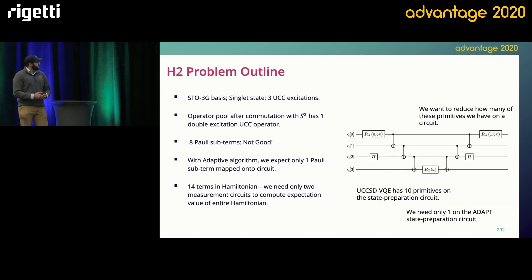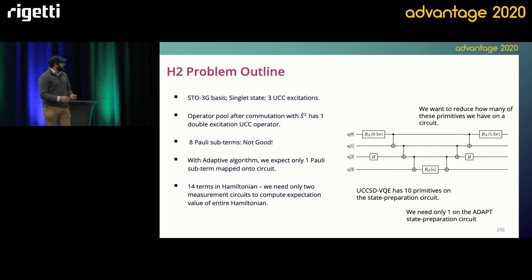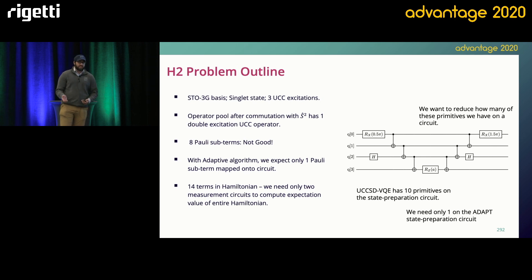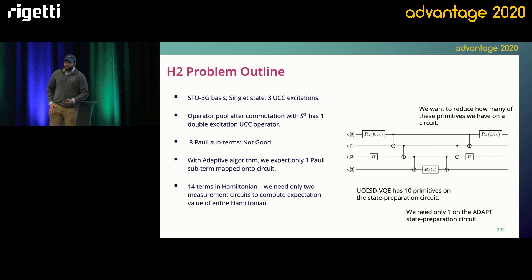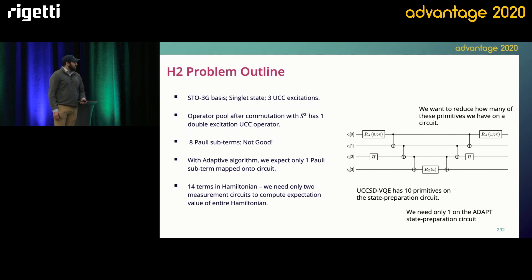For this experiment, we do H2 in the minimal basis with two electrons and four spin orbitals. By commuting with the spin squared operator, you only need one double excitation. That's still eight Pauli exponentials — we don't want to do that. So we use AdaptVQE to find that you only need one Pauli exponential. This has been done in previous papers, but nobody has done it with AdaptVQE. We wanted to try a bigger system, but the sheer number of circuit evaluations needed was too much — that's something we plan to come back to.